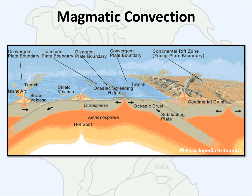Magmatic convection produces breaks in the crust and places on earth exist where new crust is made — a ridge — or destroyed — a trench. This illustration shows the presence of ridges and trenches in addition to volcanoes and the different types of plate boundaries that exist where we find ridges and trenches on earth.